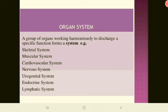Organs working harmoniously to discharge a specific function form a system. Examples include the skeletal system formed of bones, the muscular system formed of muscles, the cardiovascular system formed of the heart and arteries and veins, the nervous system made up of the brain, spinal cord, and peripheral nerves, the urogenital system from the kidney, urinary bladder, and ureter, the endocrine system from glands such as the salivary glands, thymus, pancreas, and thyroid gland, and the lymphatic system comprised of lymph nodes and lymphatic vessels.